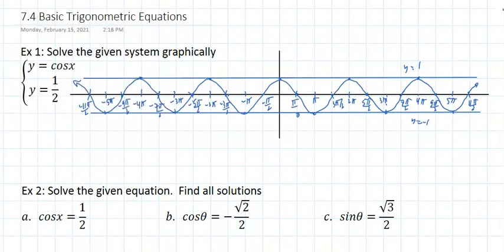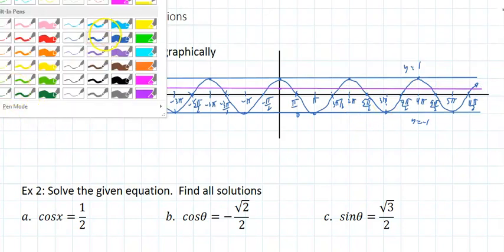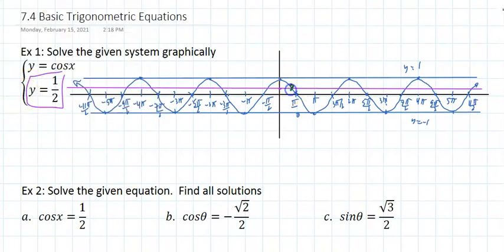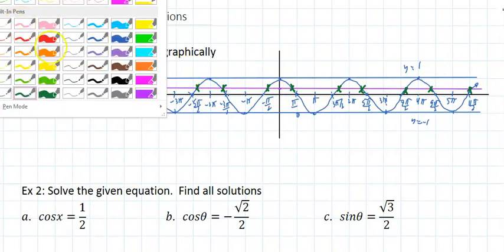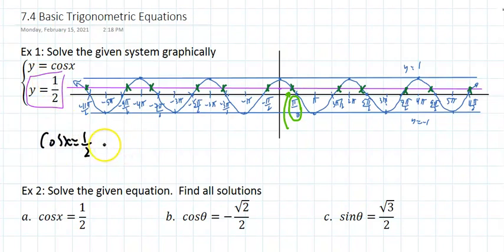Now I'm going to take the line y = 1/2 — I know 1/2 is right there — and sketch it across. What do you notice? There are a lot of intersections. The graph intersects pretty much an infinite amount of times. How am I going to list all of these solutions? Let me see if I can figure out what the first point is. If this is π/2, it seems this is the equivalent of quadrant 1. If I want to solve this algebraically, I'll set those equal to each other.